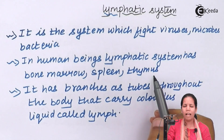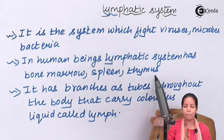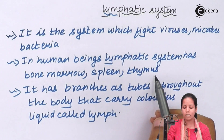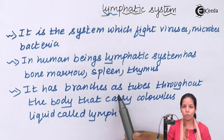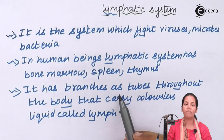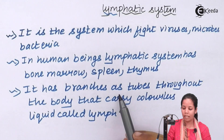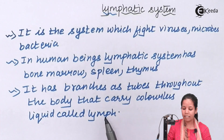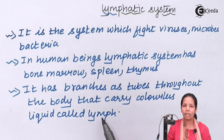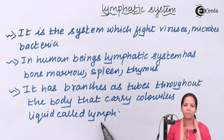Just as the circulatory system has different pipelines or branches, the lymphatic system also has branches that spread across all parts of your body. The key difference is that it carries a colorless liquid termed as lymph to various parts.